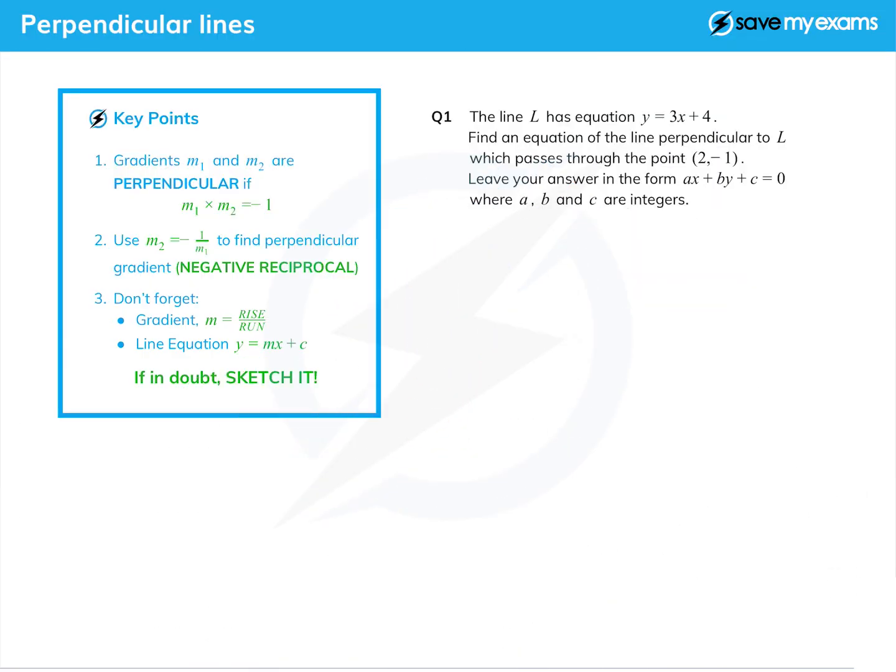In this tutorial we're going to look at perpendicular gradients and how we work with them. The thing you need to remember is if we have two gradients, called m₁ and m₂, because we tend to call the gradient of a straight line m, if two gradients are perpendicular then they multiply together to give minus one.